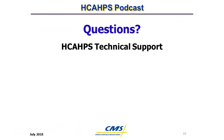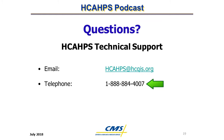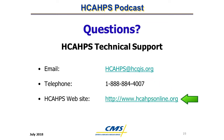Thank you for listening to this podcast on HCAHPS Score Calculations, Part 1: From Patient Discharges to Completed Surveys. Please contact HCAHPS Technical Assistance at HCAHPS@HCQIS.org or 1-888-884-4007 for any questions. For more information about the HCAHPS survey, you can visit the HCAHPS website at www.hcahpsonline.org.